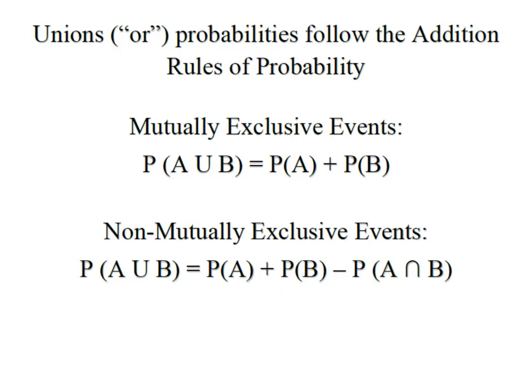However, when we have non-mutually exclusive events, in other words, there are some that are both, once we add the probability of A and the probability of B, we have to subtract out those that are both so that we don't count them twice.